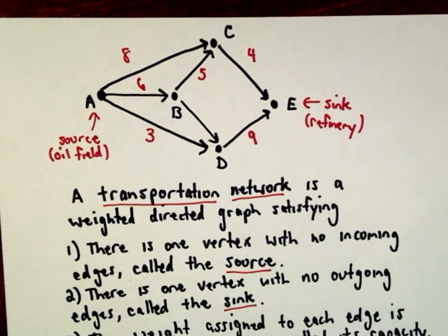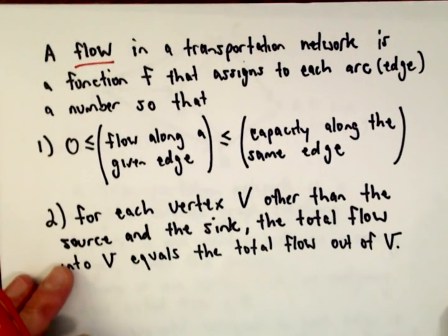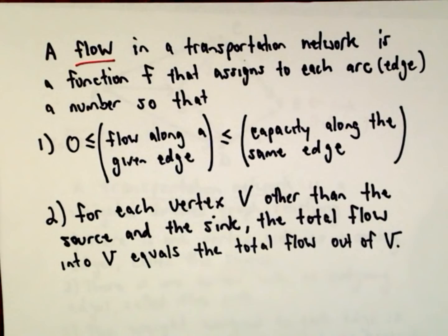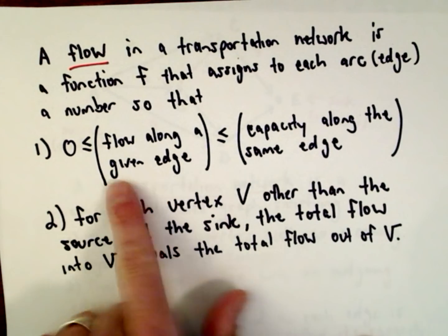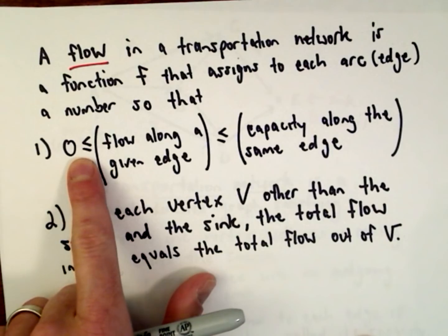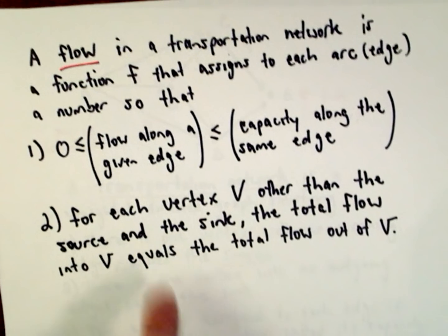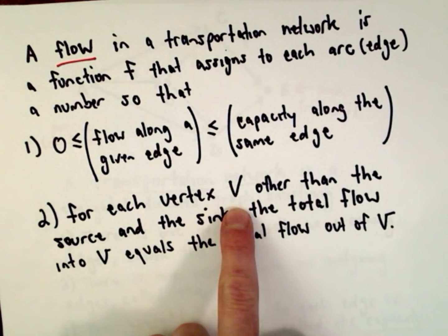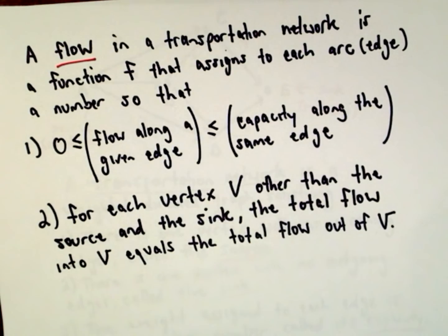Now we're going to assign what are called flows. A flow in a transportation network is a function f that assigns to each arc a number such that the flow along a given edge is greater than or equal to zero, that flow is less than or equal to the capacity along the same edge, and for each vertex v other than the source or the sink, the total flow into v equals the total flow out of v.